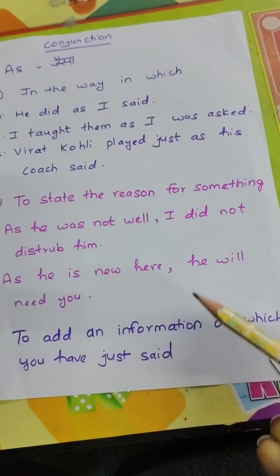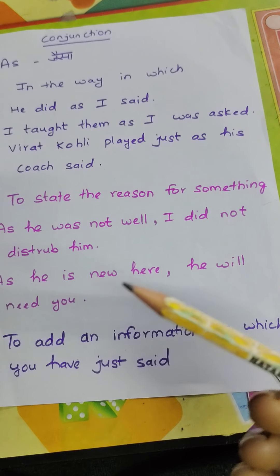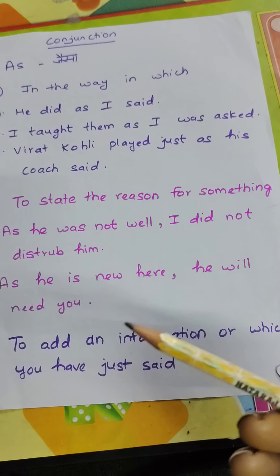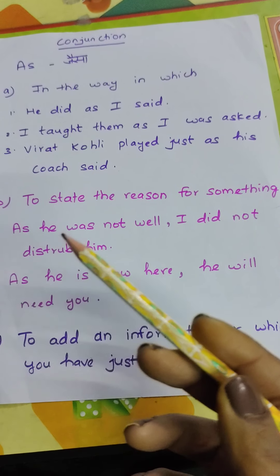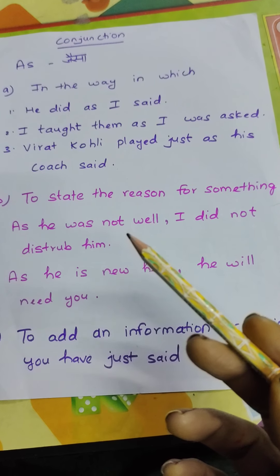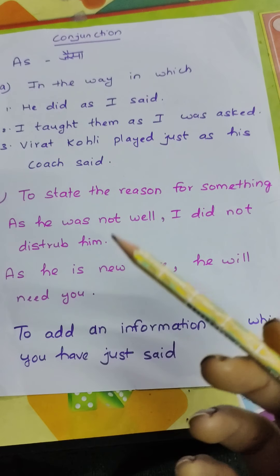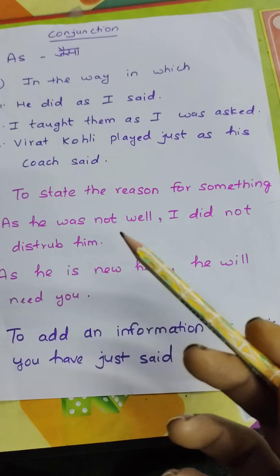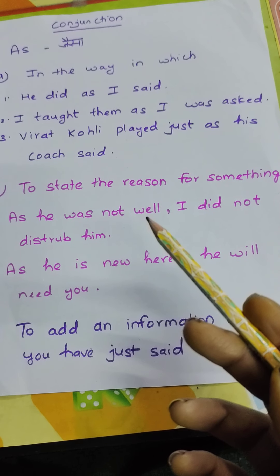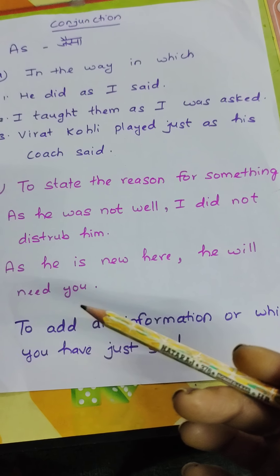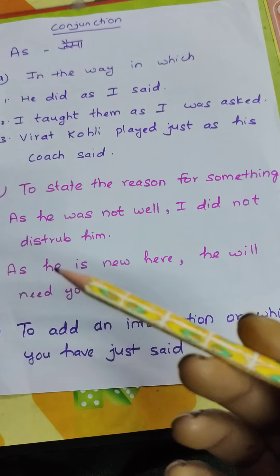Us main wajah ki wajah se effect hua — result hua ki woh isliye nahi aaya. Lekin 'as' tab lagate hain jab hum reason mein extra information bata rahe hain — main wajah nahi hai. 'As he was not well, I did not disturb him' — yahaan main baat 'I did not disturb him' hai, aur 'as' se extra reason add ho raha hai. Yahi farak hai 'as' aur 'because' mein.